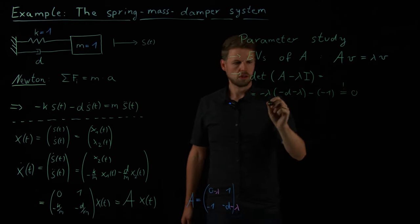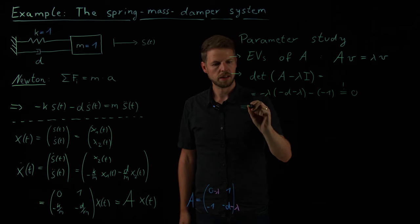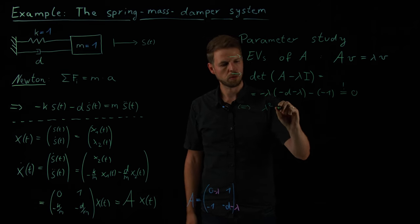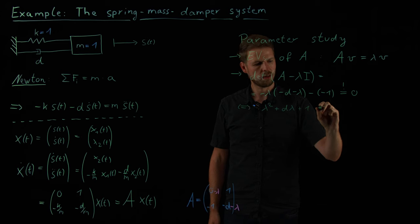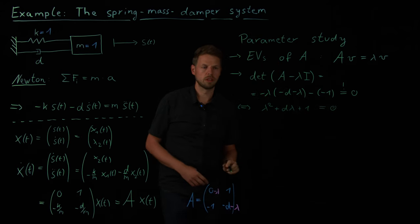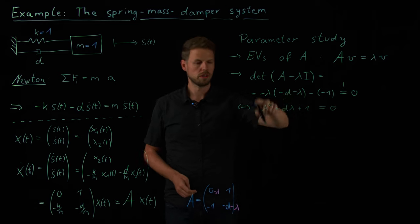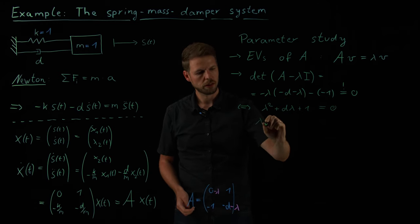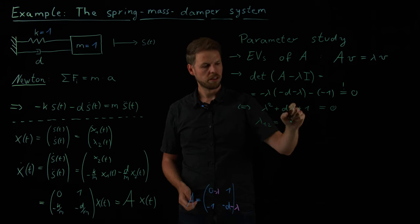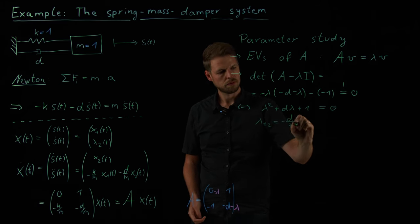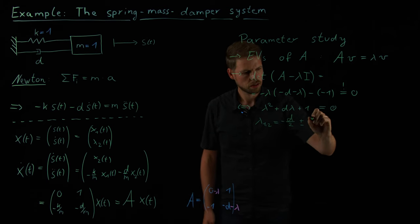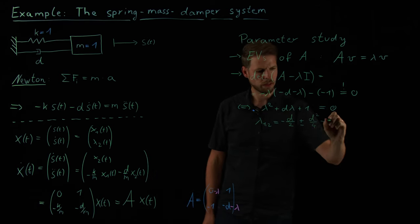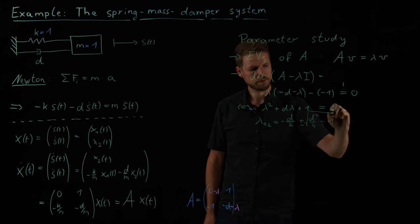So what we get is, we get minus lambda times minus d minus lambda, minus the off diagonal, minus, and this is minus 1 times 1 gives me minus 1. And this has to be 0. This is how we find eigenvalues. And so if I sort out all the minus signs, what I get is this quadratic equation. Lambda squared plus d times lambda plus 1 is 0. And this can easily be solved using the standard PQ formula. So what we now get is the solution of this is lambda 1 and 2 is minus d over 2. Plus minus, and then the square root of this term over 2. So d squared over 4 minus the Q part, the last one, minus 1.